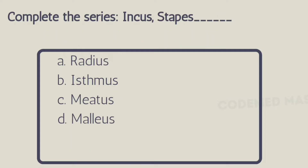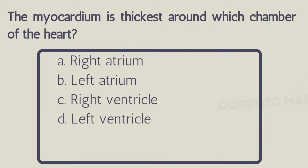Next question: complete the series — incus, stapes, and there is one more term which needs to be included. The right answer is Option D, malleus. These are the auditory ossicles.